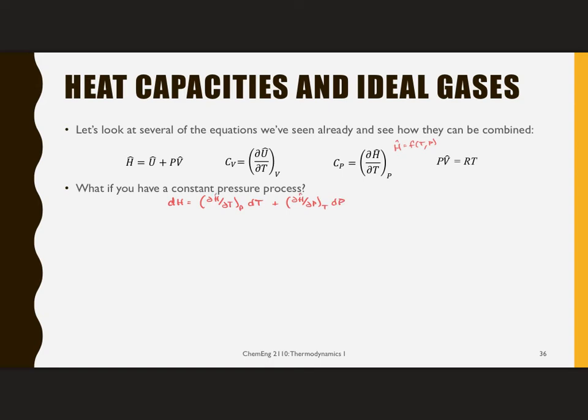And if I do this in specific, put all those circumflexes on there. But based on this definition up here, this is C sub P. And this must be zero in order for this to be true. So DH is C sub P DT.